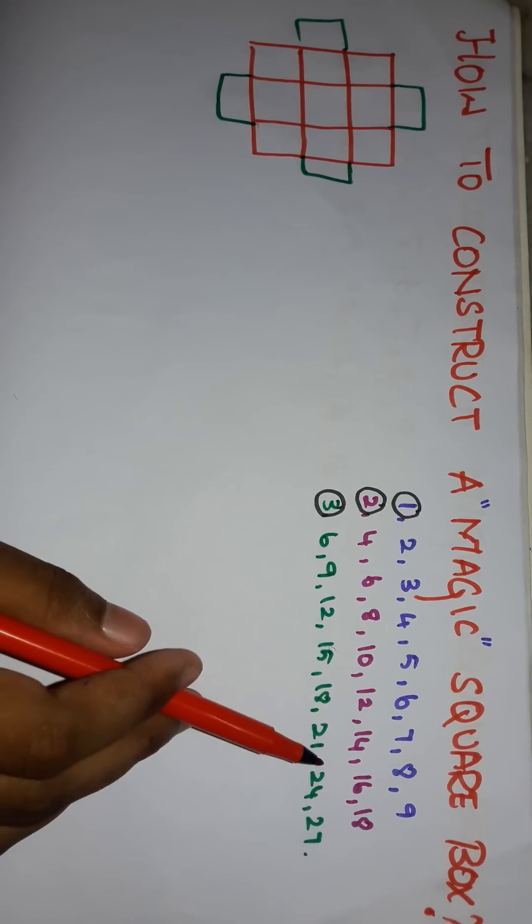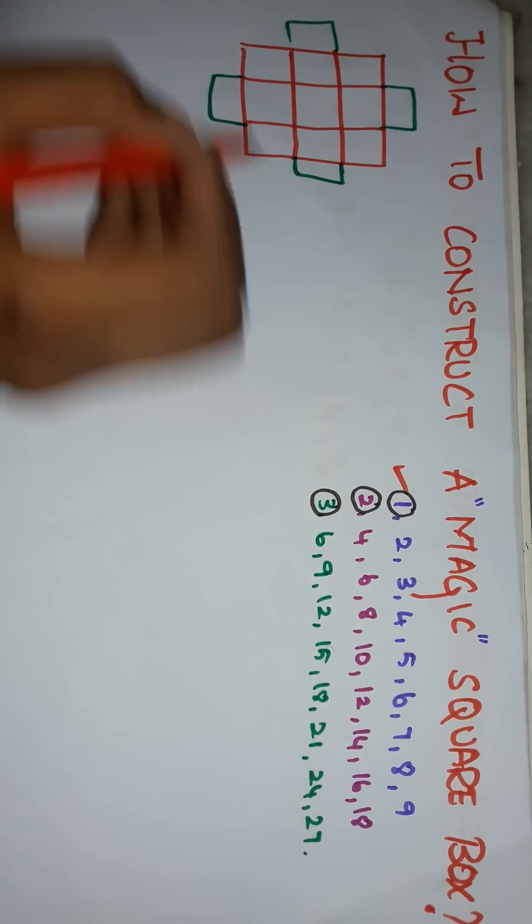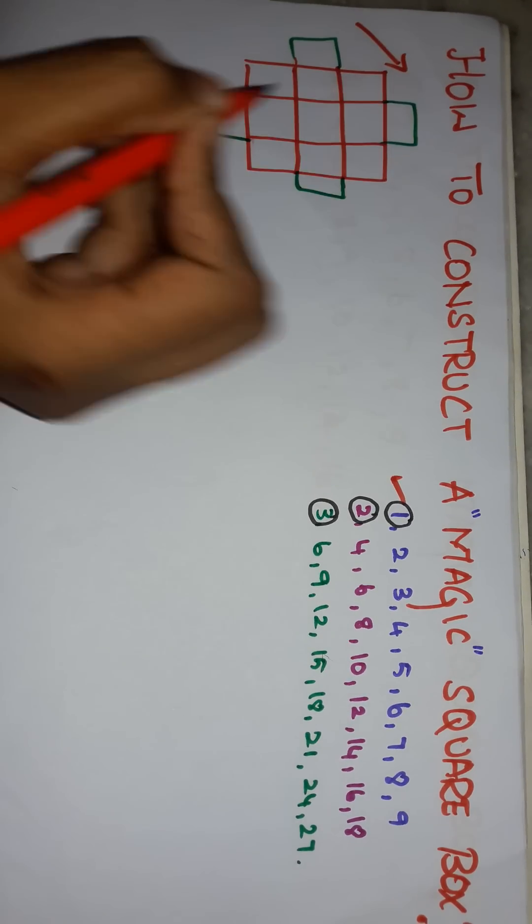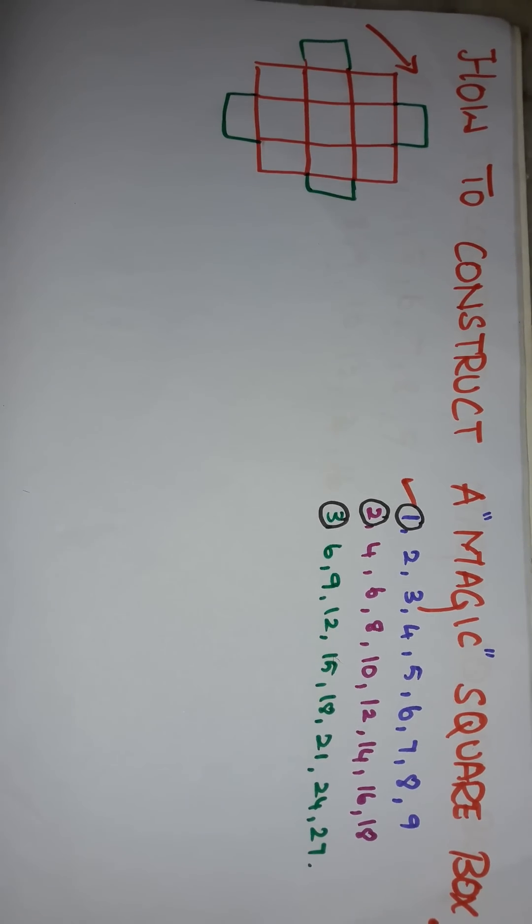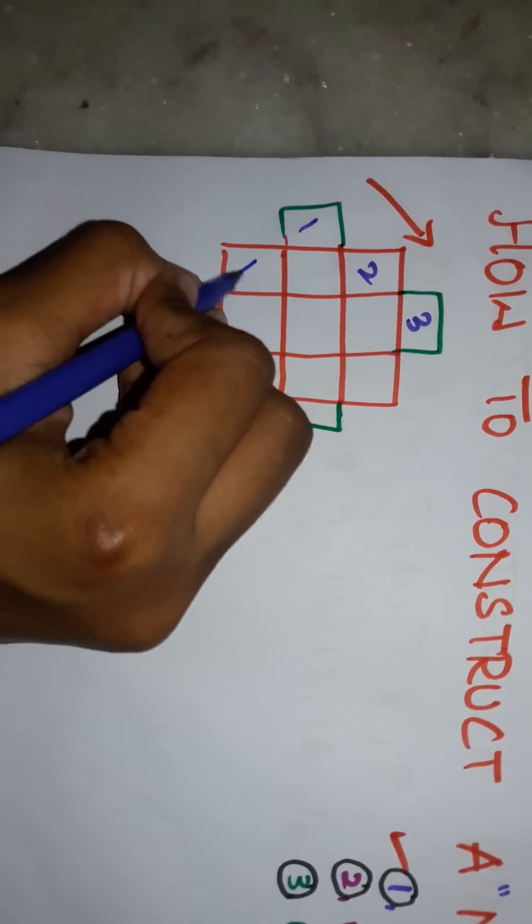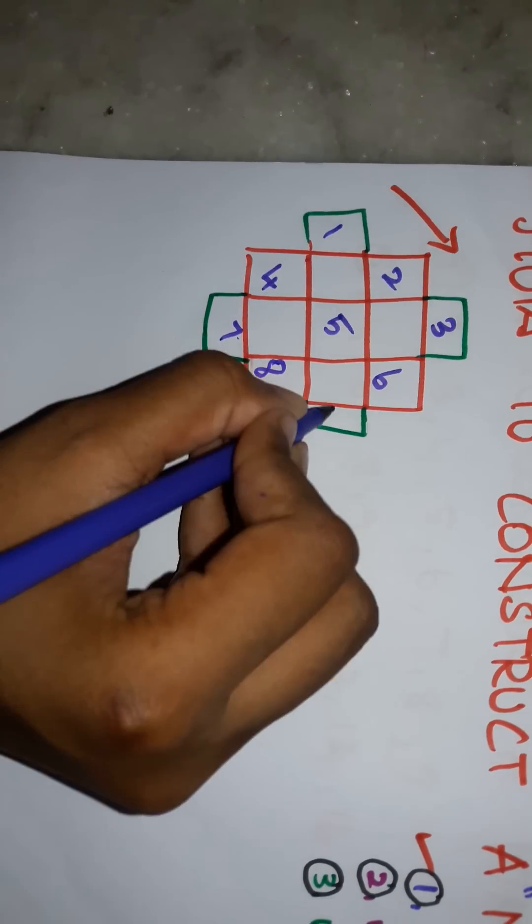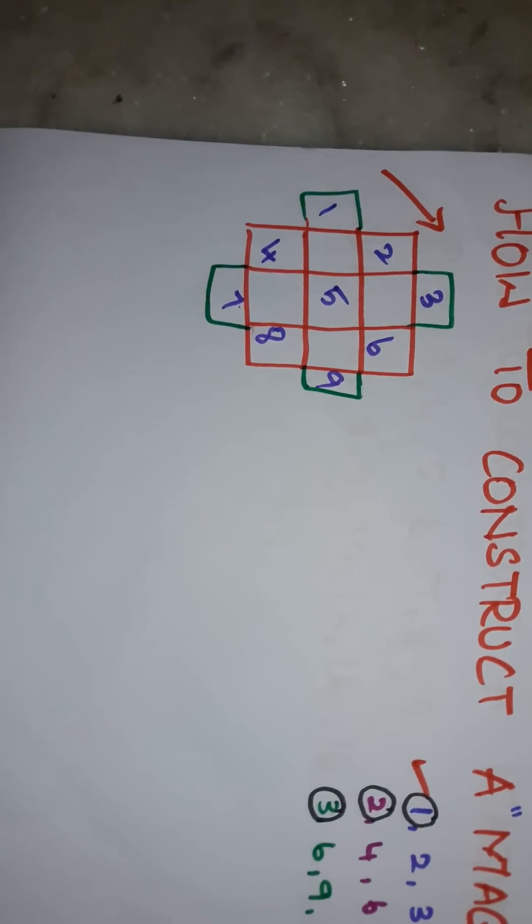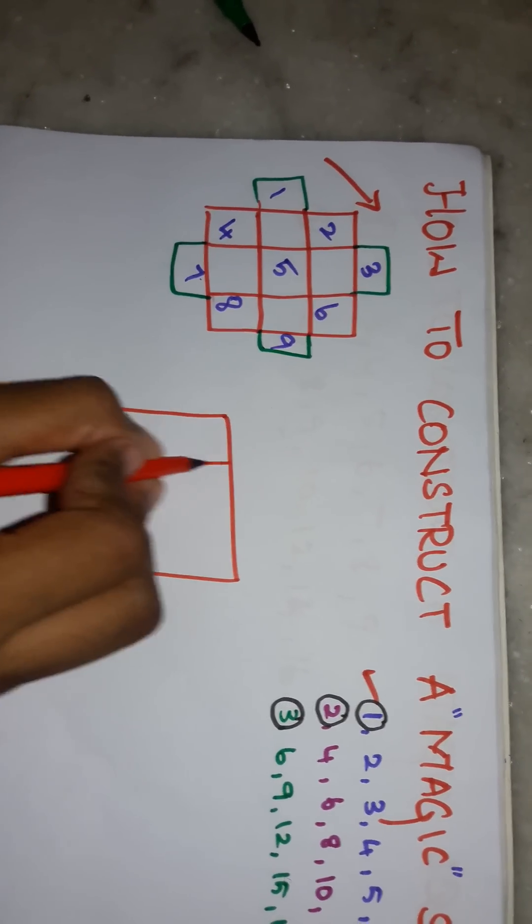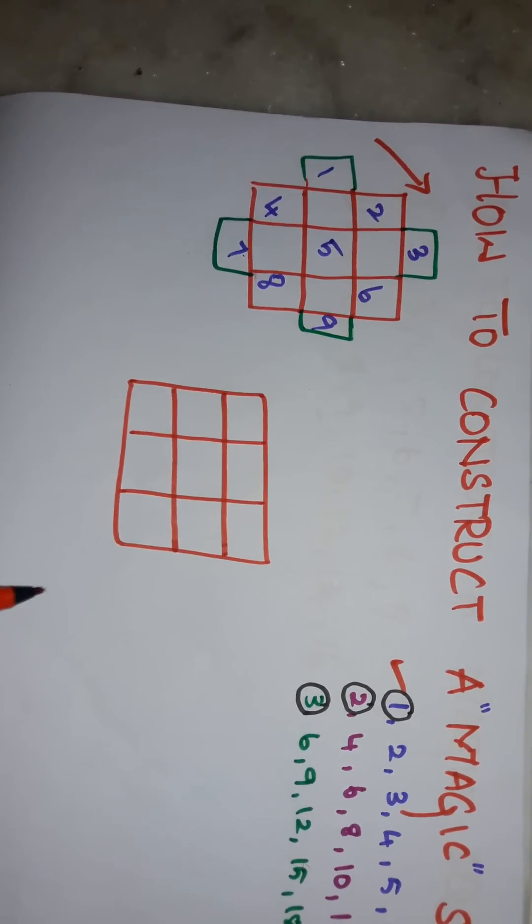And arrange these numbers. You can take any number. For example, I have taken this number, this row. Arrange these numbers diagonally like in this direction. Leave these boxes. That's all. And the main box is going to be a magic square box.